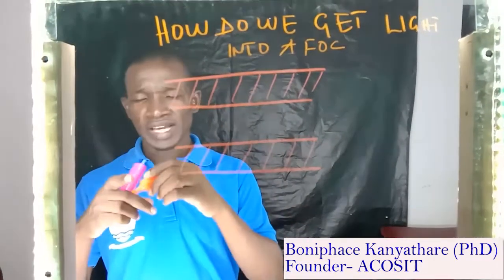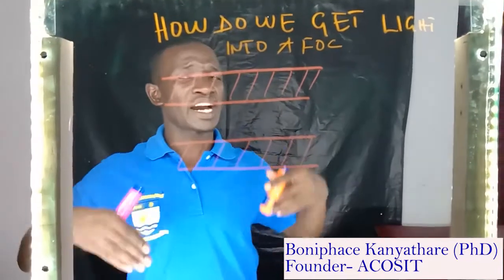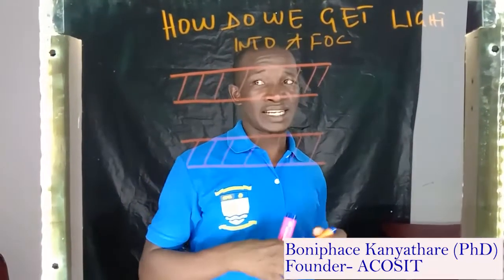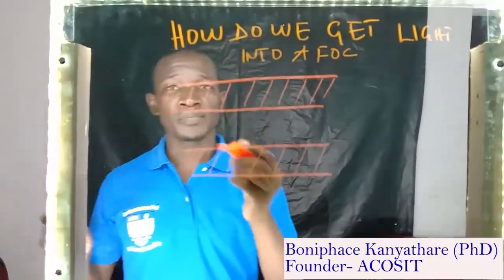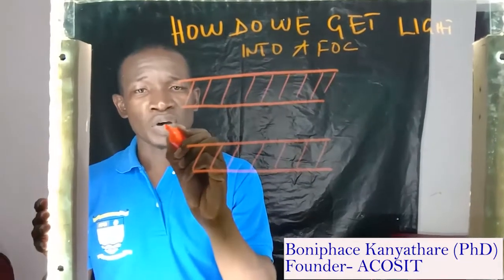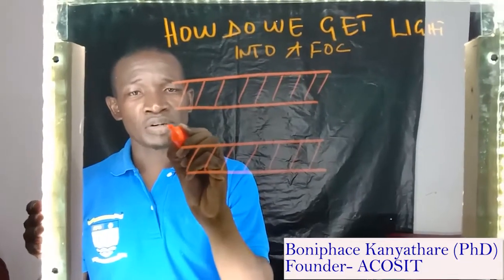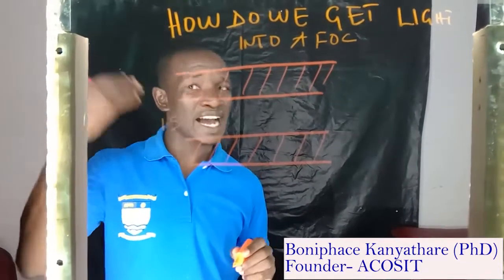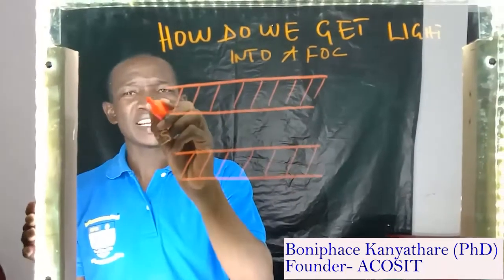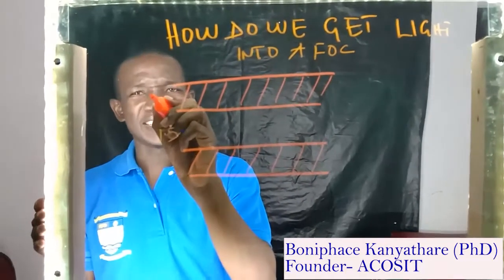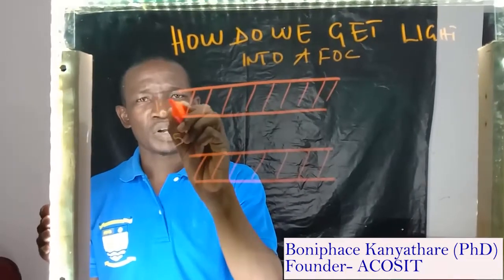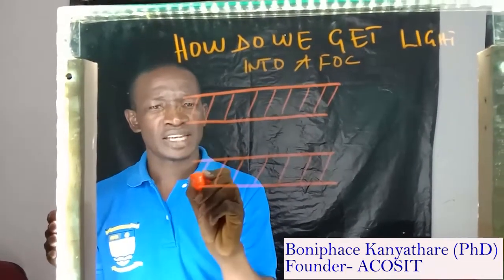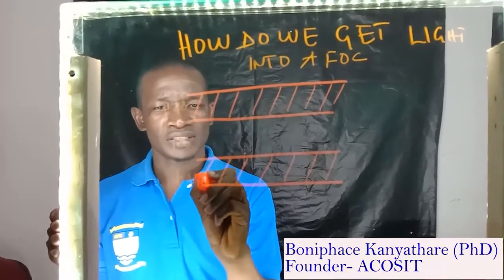We said that the core must have a higher refractive index than the cladding. So let's say that our core here is 1.5. Because it should have a refractive index that is higher, let's say our cladding is slightly lesser — so 1.48 on both sides.